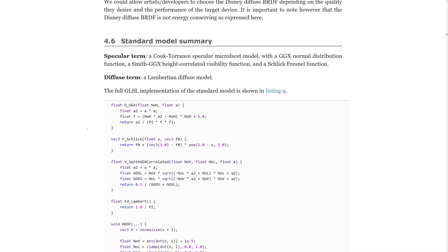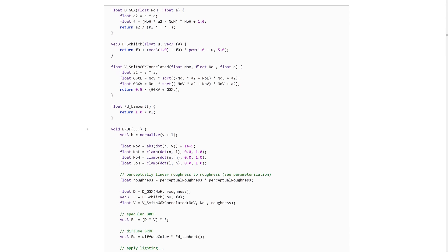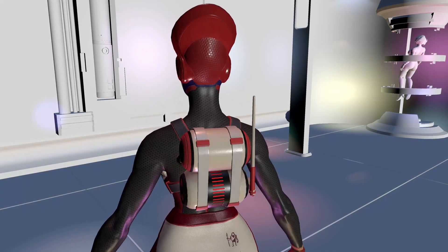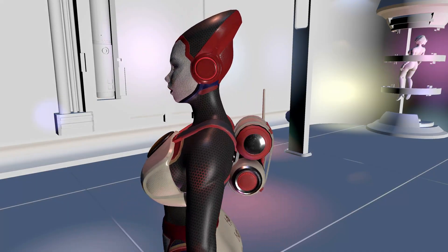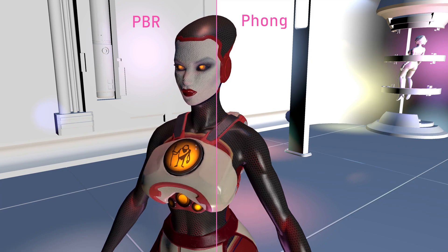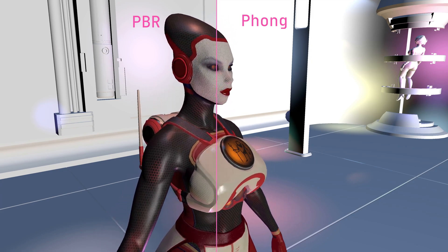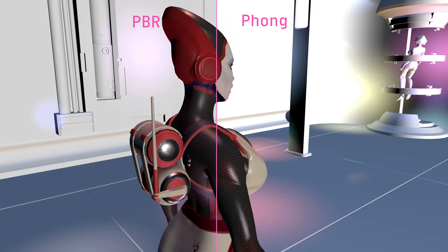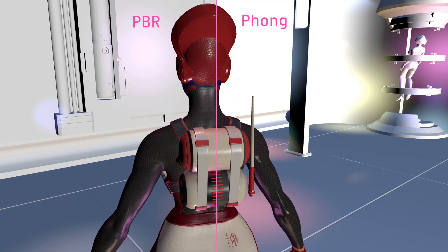This concludes the basic PBR formulation, which is summarized here. And here is the result when we implement it in Primal Engine. Note how the model now appears to have metallic parts in contrast to what it looks like using the Phong BRDF.